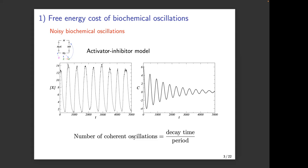The larger this number, the longer the oscillation maintains coherence. If this number is 10 and I am at oscillation 100, then two different time series will be completely dephased. This is the activator-inhibitor model — a biochemical oscillation with no external signal. The question I'm asking concerns the precision of these oscillations as quantified by the number of coherent oscillations, which is just the decay time divided by the period.